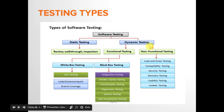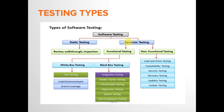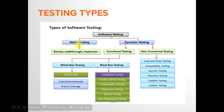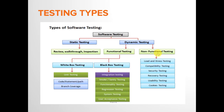Dynamic testing means testing an application by executing the code, which means you have a developed product and you have to ensure it is a bug-free application. In dynamic testing there are two further parts: functional testing and non-functional testing. Once a developed product is received, the tester has to make sure both the functional and non-functional aspects of the application are working fine.